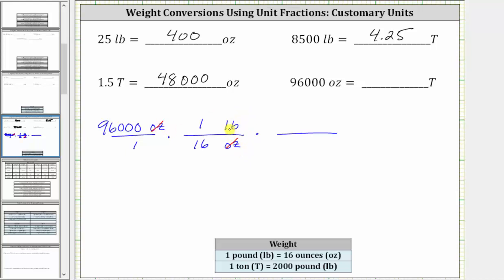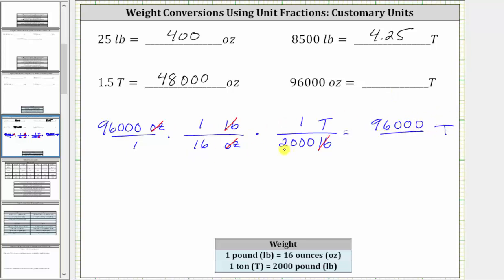Now we convert pounds to tons. Because we want pounds to simplify out, we have pounds in the denominator and tons in the numerator. One ton equals 2,000 pounds, and therefore the unit fraction is one ton over 2,000 pounds. The units of pounds simplify out, leaving us with tons. Now we multiply, and we know the units are tons. In the numerator we have 96,000, divided by, in the denominator we have 16 times 2,000, which is 32,000. And 96,000 divided by 32,000 is three, giving us three tons. So 96,000 ounces equals three tons.